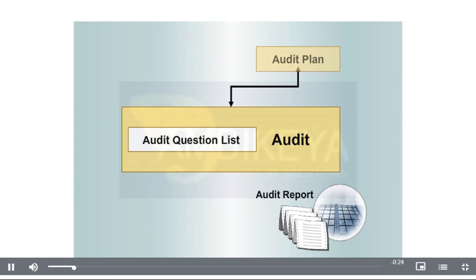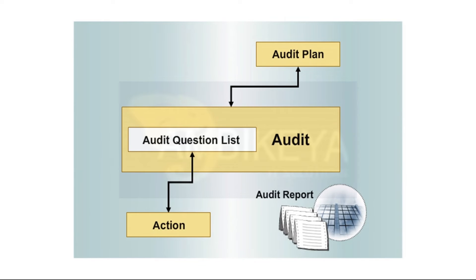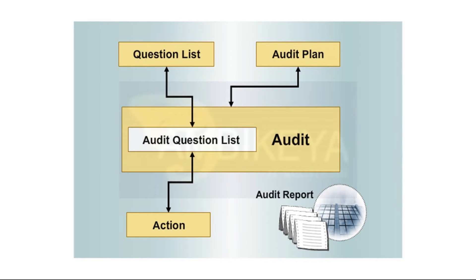For computer-assisted auditing, the data object types — that is, components — compiled in this figure are available in audit management. Question lists serve as the basis for recurrent audit questions and criteria according to which the audit object is evaluated; they have master data status. By defining hierarchy profiles for question lists, you can structure the lists according to any desired hierarchy.